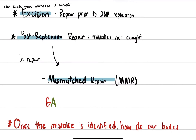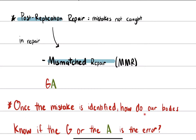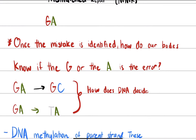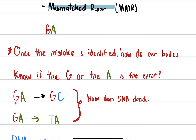Once a mismatch is identified, how does the body know whether the guanine or the adenine is the error? During post-replication checking, the body asks: is it the guanine or the adenine that's the mistake? For prokaryotes, they need to decide which strand is the template — do we keep the guanine and replace the adenine with a cytosine, or keep the adenine and replace the guanine with a thymine?